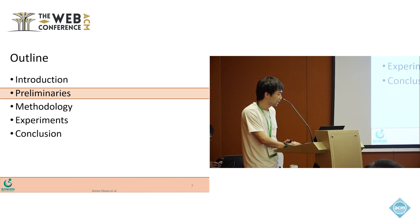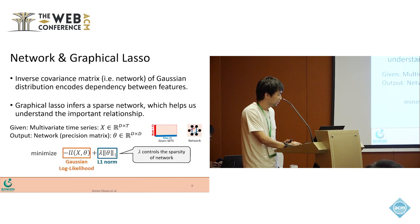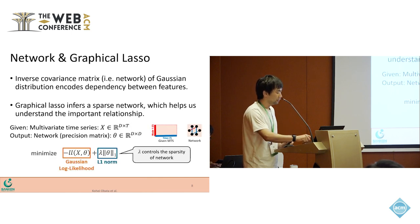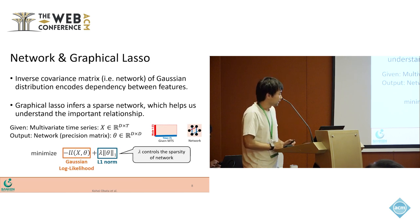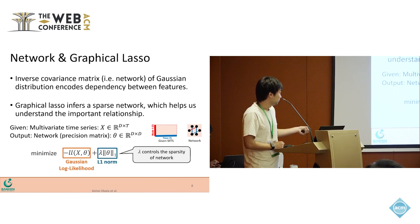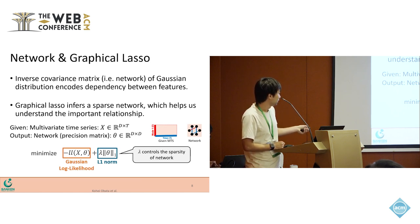Next, I talk about some background knowledge. In this study, we define a network as an inverse covariance matrix of the Gaussian distribution. The network can be expressed as a graph, and the important feature of this network is that if there is an edge between two variables,